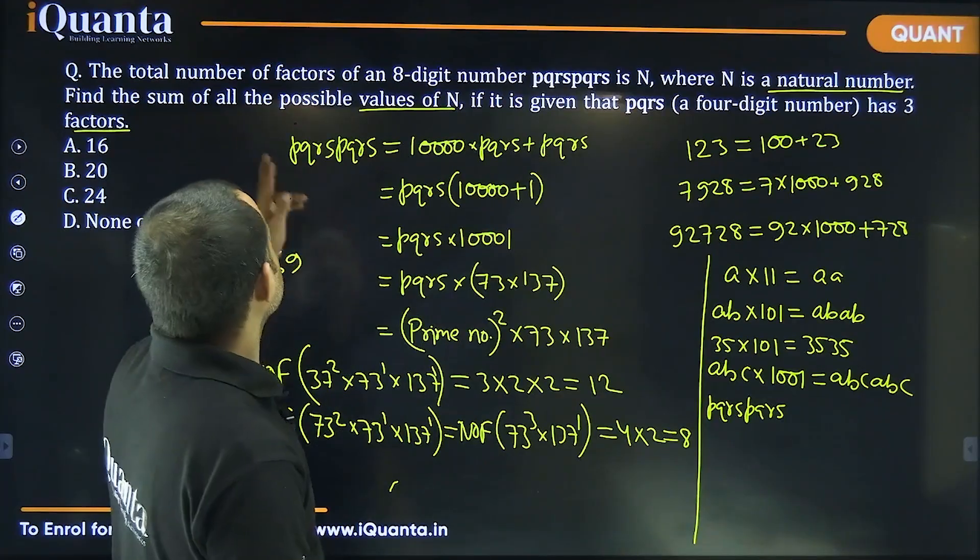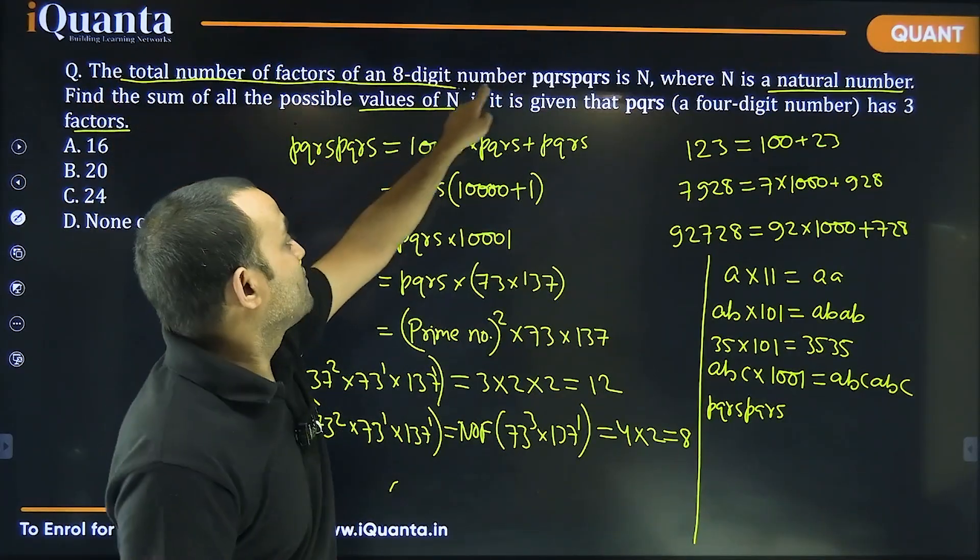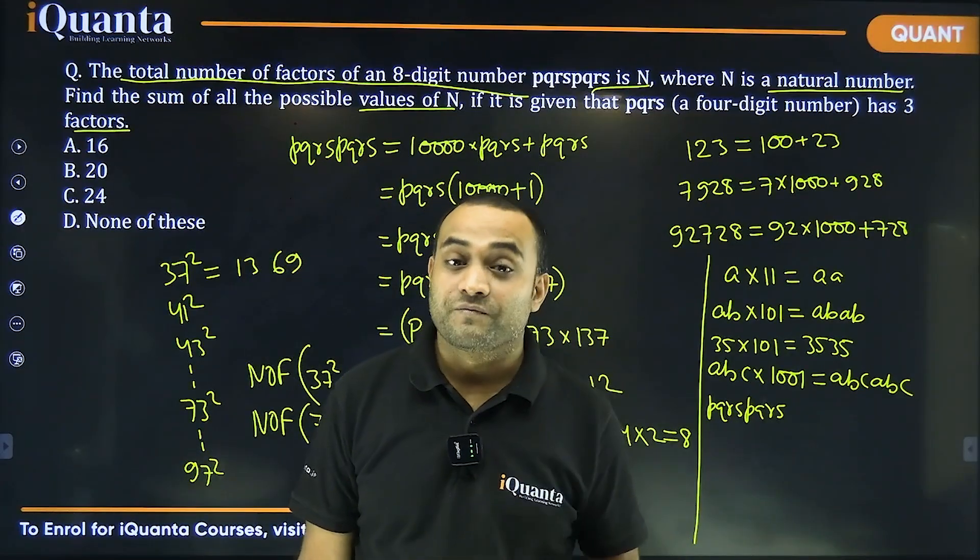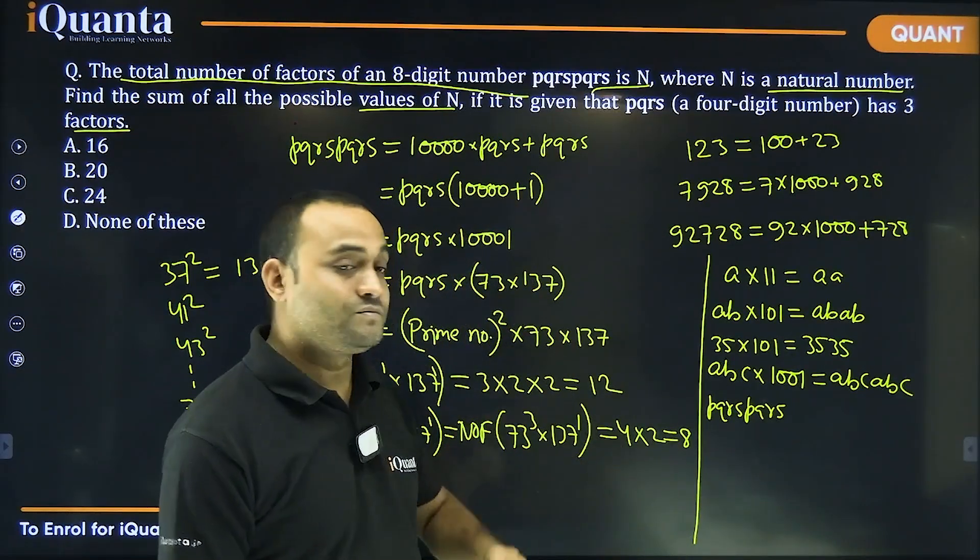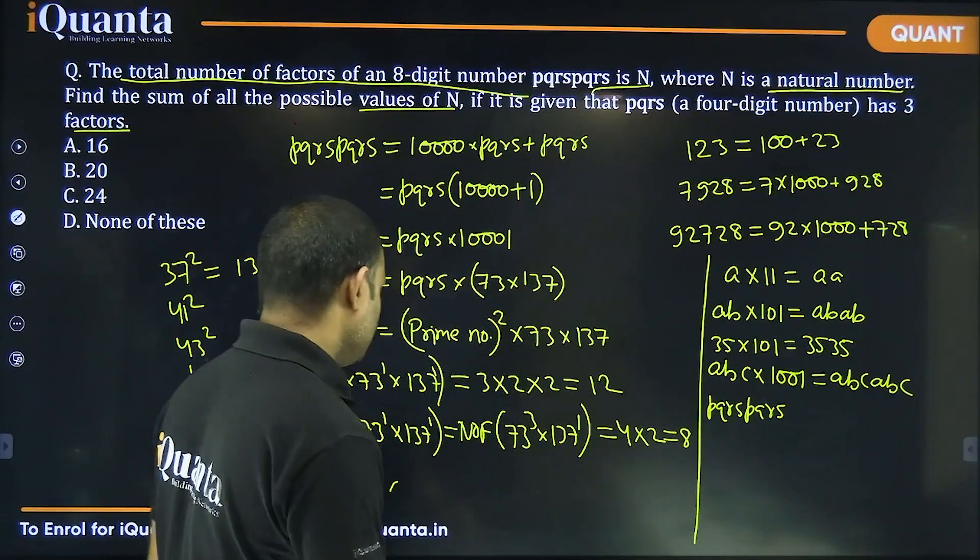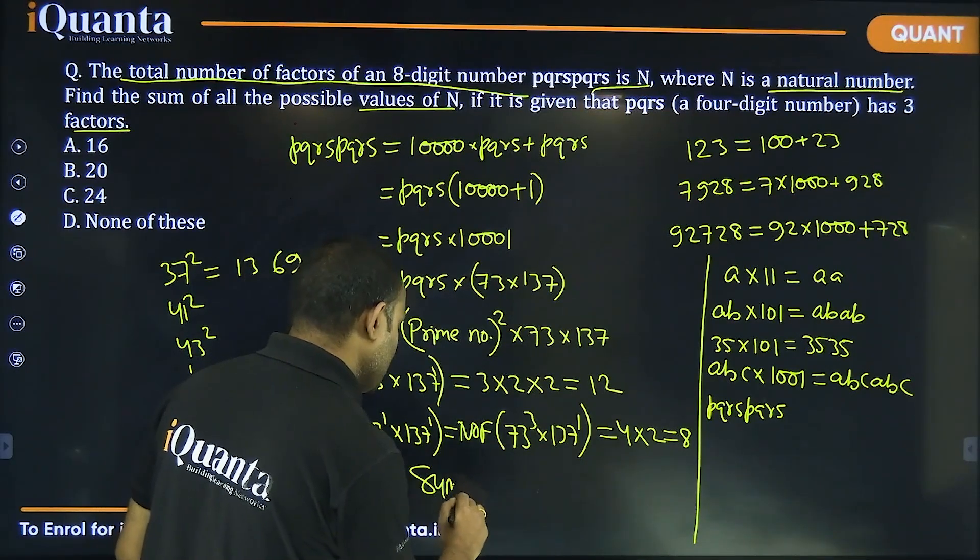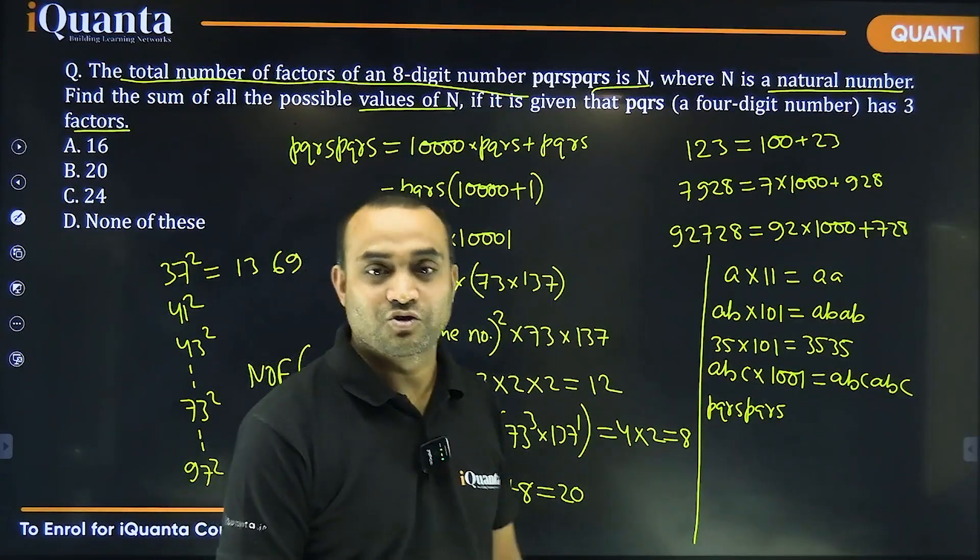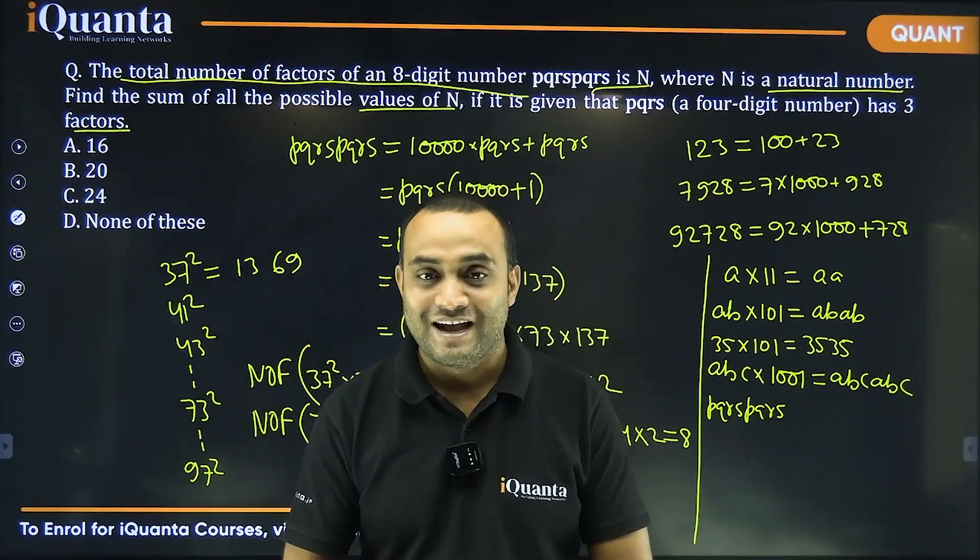Now, it says that total number of factors of this number is n. So, n can take two different values. One value will be 12, another will be 8. So, the sum of all the values of n that we are looking for is 12 plus 8 that is equal to 20 and that will be our answer.